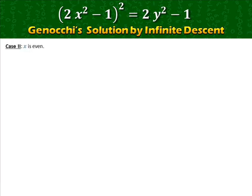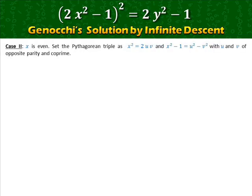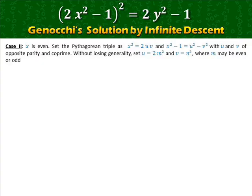Case two: x is even. Set the Pythagorean triple as x² = 2uv and x² − 1 = u² − v², with u and v of opposite parity and co-prime. Without loss of generality, set u = 2m² and v = n², where m may be even or odd but n is always odd. Hence x² − 1 = 4m²n² − 1.